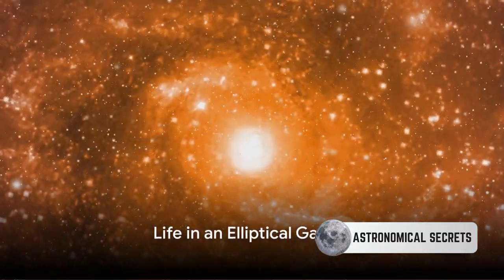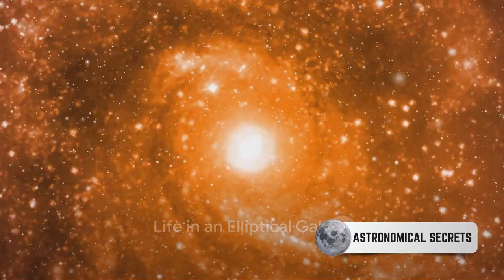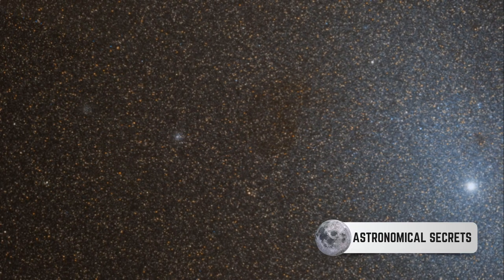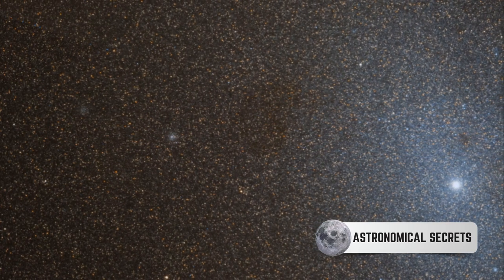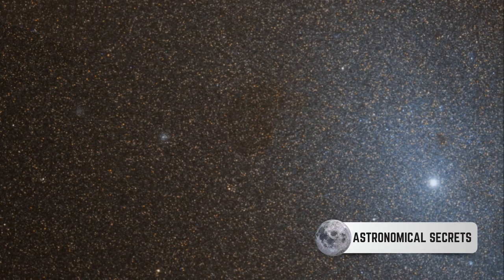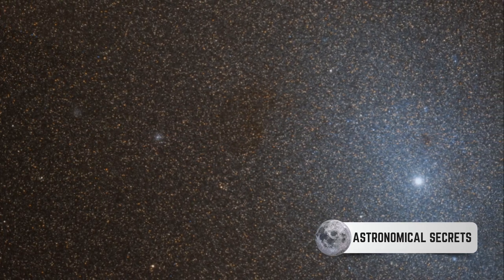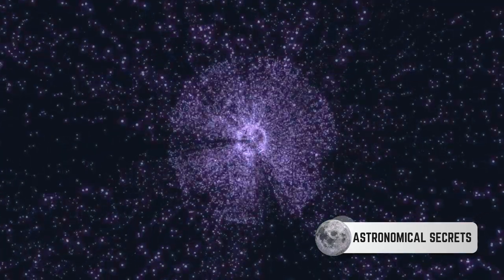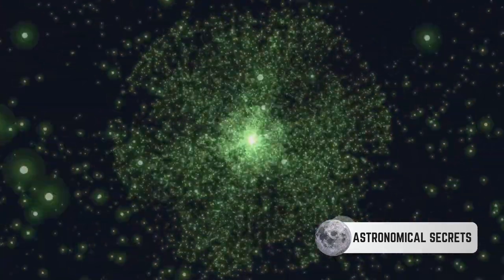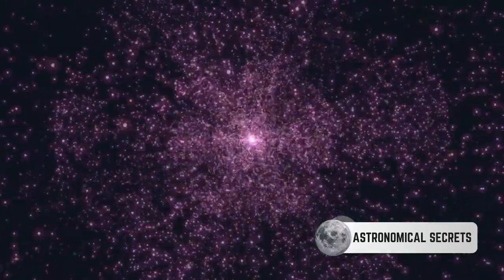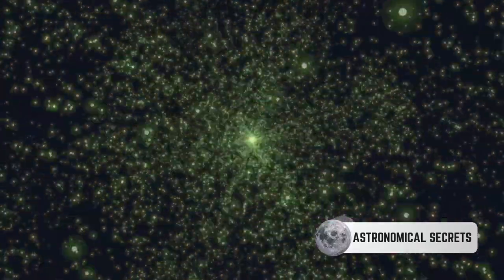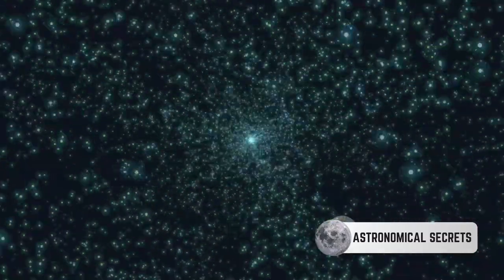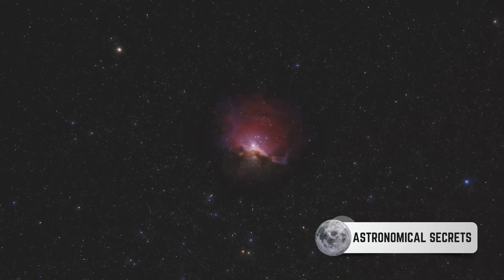Imagine living in an elliptical galaxy, where the night sky is filled with a trillion stars. The concept might seem straight out of a science fiction novel, but let's dive into this thought experiment. An elliptical galaxy is a hotbed of ancient stars, shaped like elongated spheres. They are densely packed with stars, so if you were to gaze up at the night sky from a planet within one, it would blaze with a spectacular stellar display. A trillion twinkling points of light, far more than our own night sky, would illuminate the darkness.